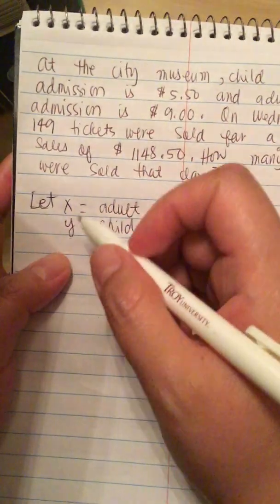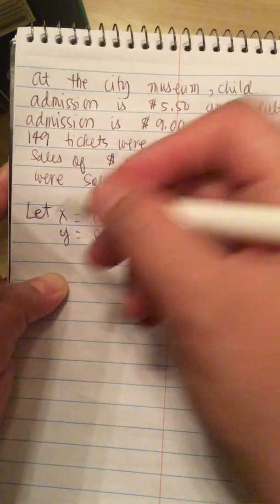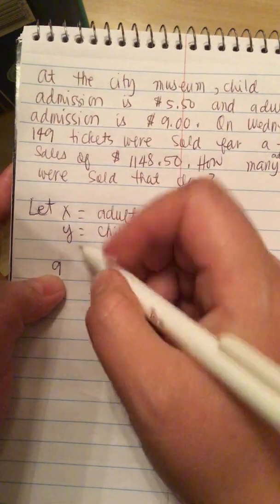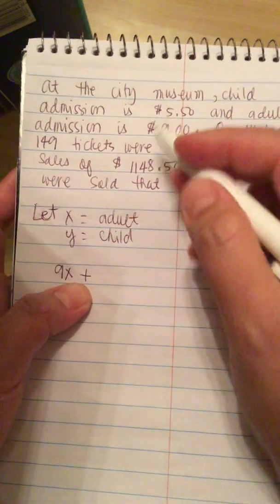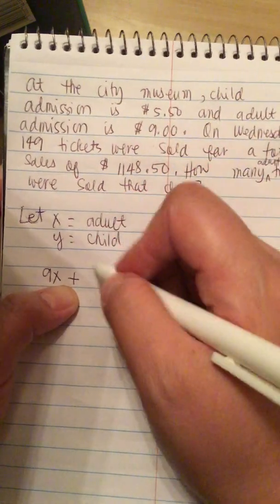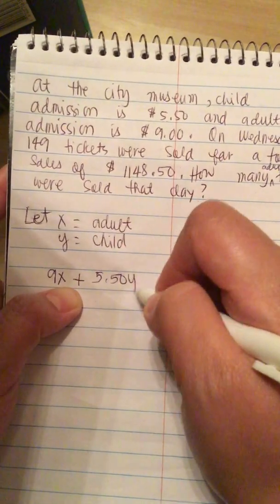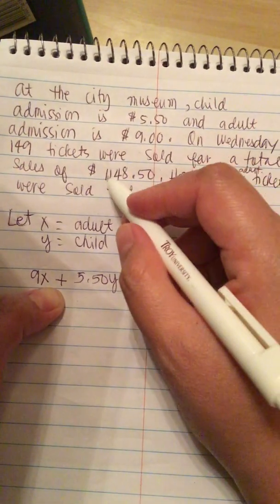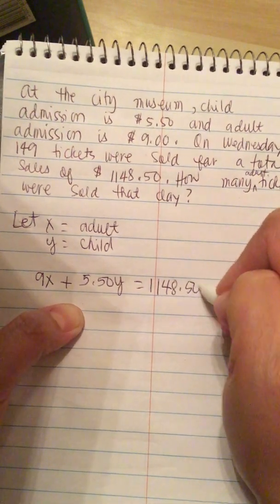Now we have to create an equation. Adult tickets cost $9, so it's 9X plus child tickets 5.50Y equals $1,148.50.